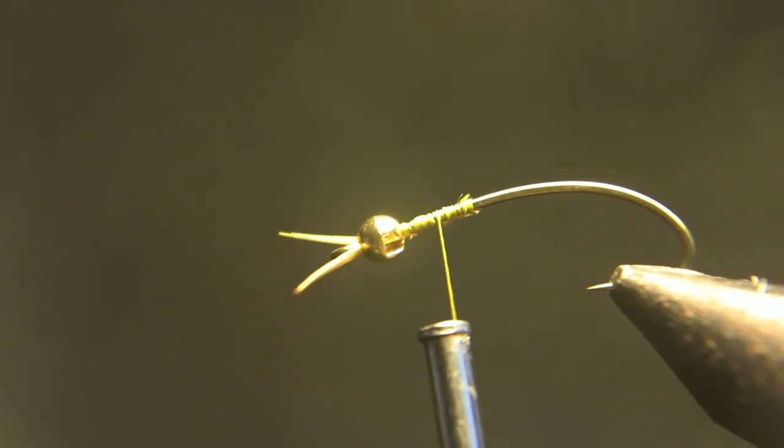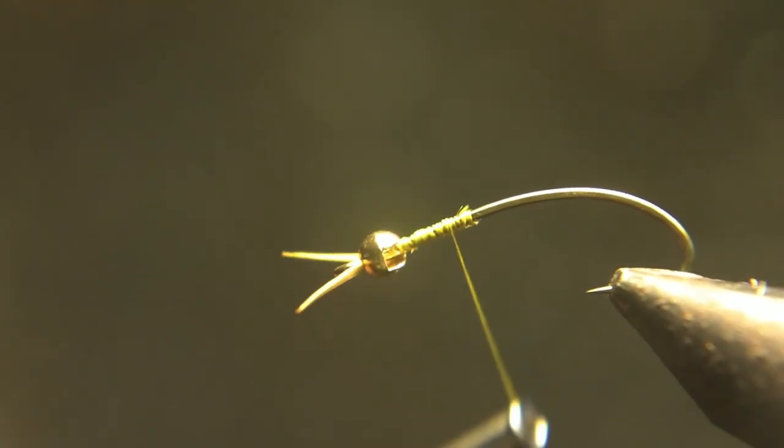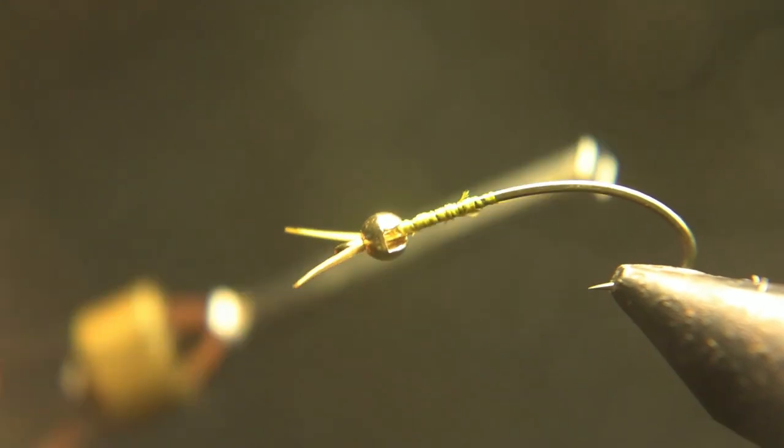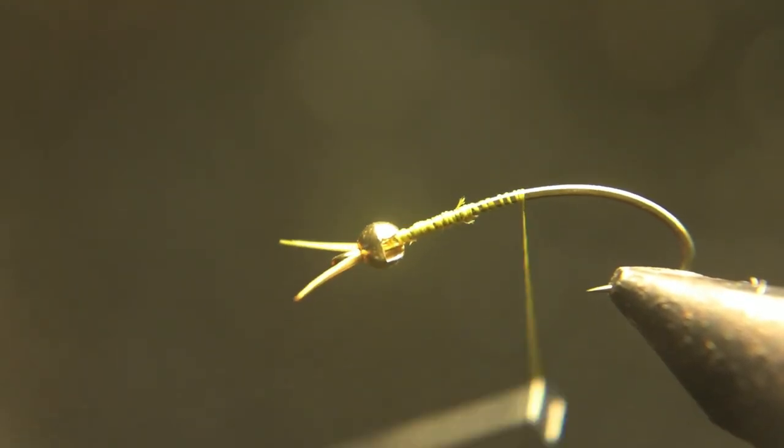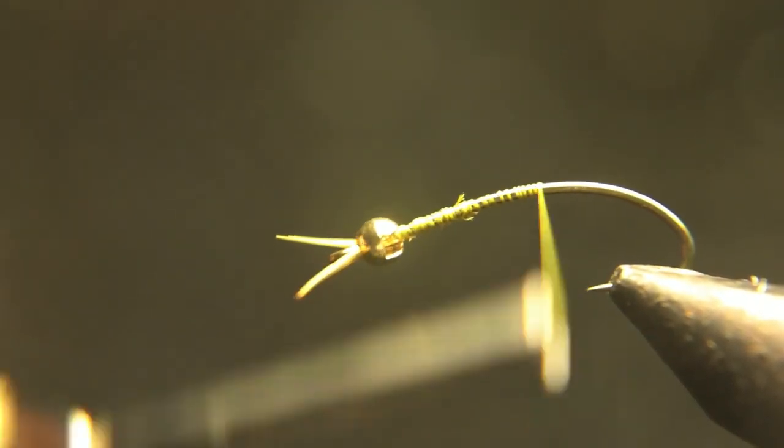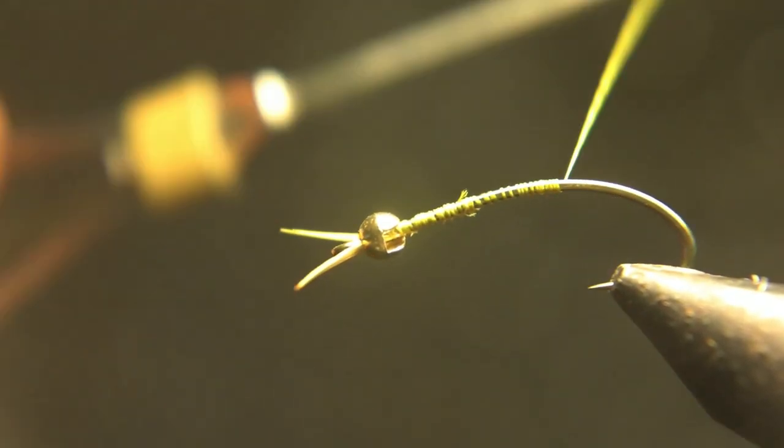Now you're going to wrap your thread all the way back to a little bit past the point of the hook, about the barb of the hook, and you're going to tie on your tail there.